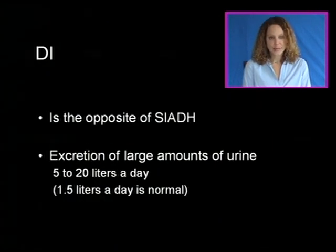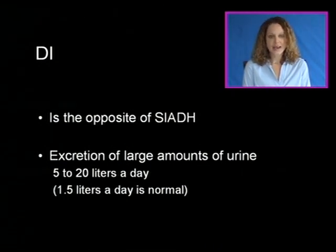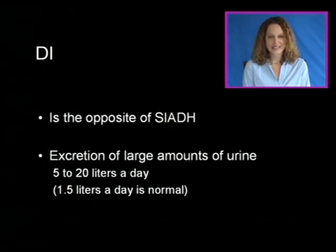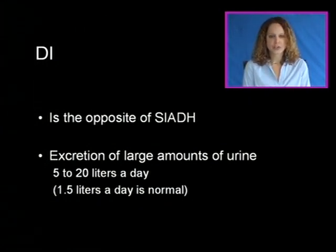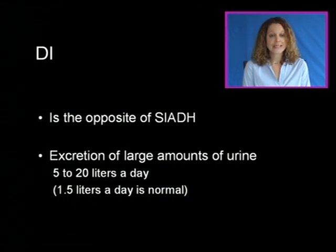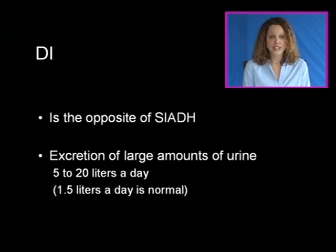Diabetes insipidus, also referred to as DI, is the opposite of SIADH, or Syndrome of Inappropriate Antidiuretic Hormone. It is characterized by the excretion of large amounts of urine — up to 5 to 20 liters a day. Normal urinary output is about 1.5 liters a day.